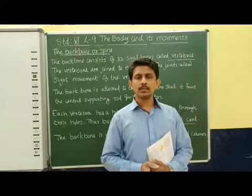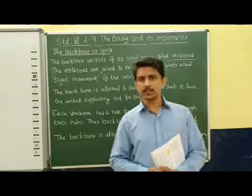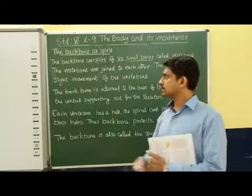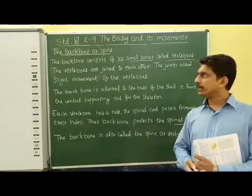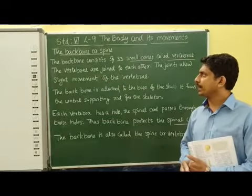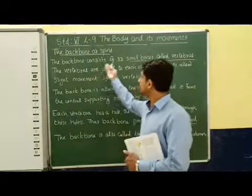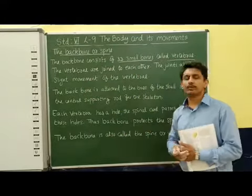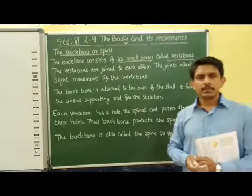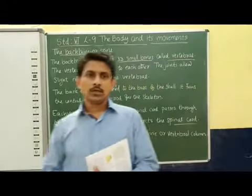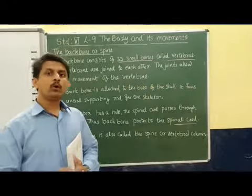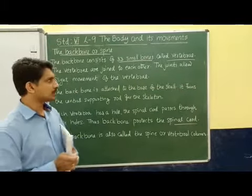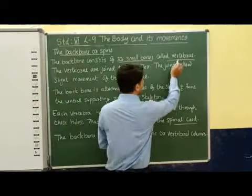Next, we are going to discuss another important part of the human skeletal system, that is the backbone or the spine. The backbone consists of 33 small bones called vertebrae. When we are considering the backbone, it is a group of 33 small bones, and we call these small bones vertebrae.